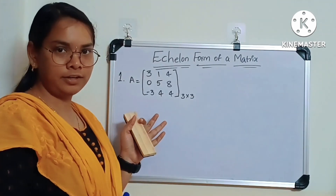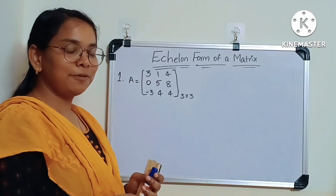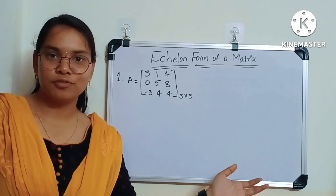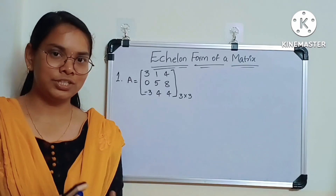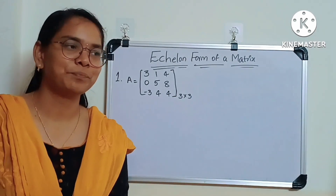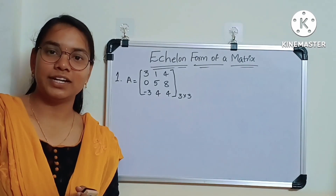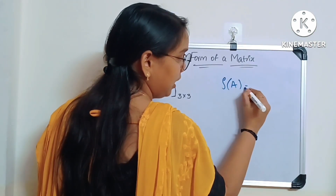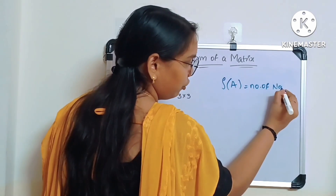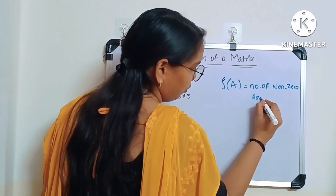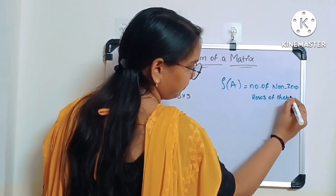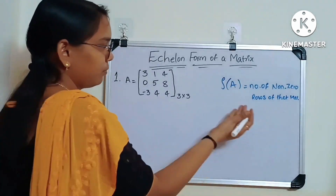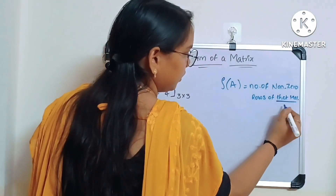I have brought the problem here. One more thing I forgot to mention: we have seen how to convert a given matrix into echelon form, but we also need to know how to find the rank of the matrix. The rank of a matrix, once in echelon form, is equal to the number of non-zero rows of that matrix — not the total number of rows, but the number of non-zero rows.